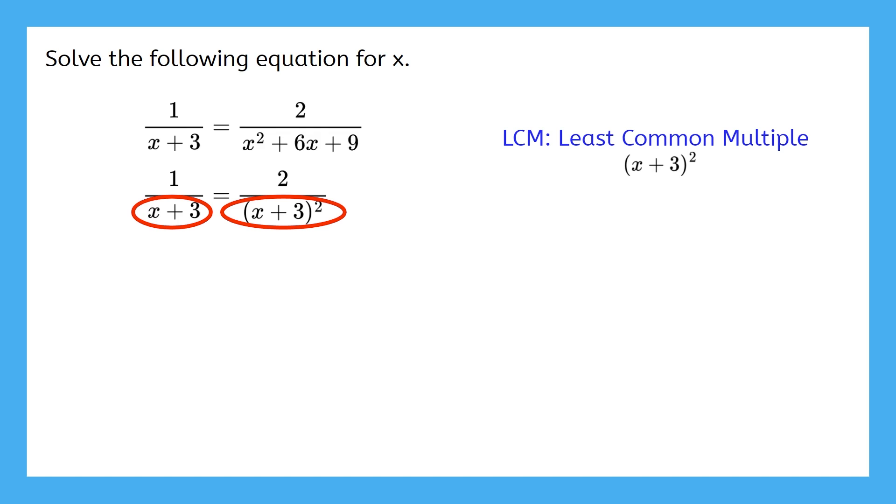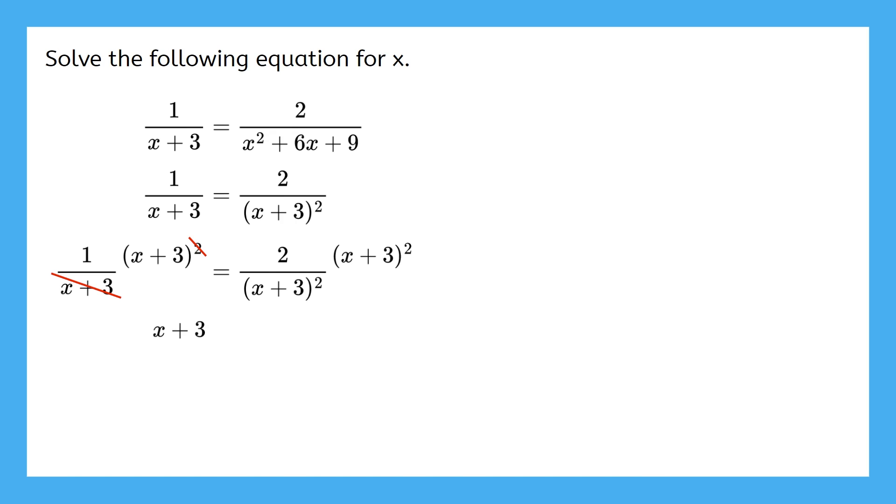In previous videos, we actually got our denominators to be equal to the LCM. Now that we're solving, we just needed to know the LCM so we can multiply by it. So now our next step is to multiply every fraction by this LCM. In the first fraction, an x plus 3 cancels in the numerator and denominator, and leaves us with x plus 3 times 1, which is just x plus 3. In the second fraction, x plus 3 squared cancels in the numerator and the denominator, and we're just left with 2.